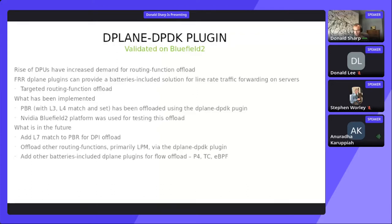The routing function we specifically picked was the policy-based routing function, which does L3, L4-based flow steering. The use case we targeted was two-gateway solutions. The server is configured with a single gateway and can be part of an EVPN domain, talking to an anycast gateway using a distributed symmetric IRB EVPN solution. But with PBR, you can have intelligent gateways — for example, a centralized gateway that sends traffic to a firewall or load balancer. Using this L3, L4 match, we can steer traffic to different gateways at line rate using DPDK.